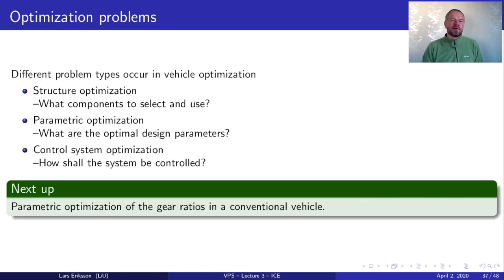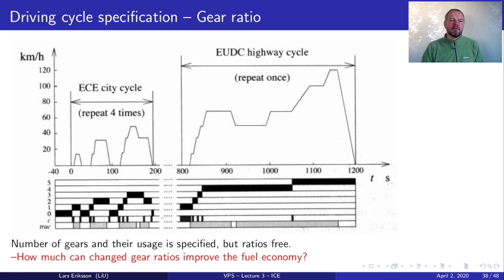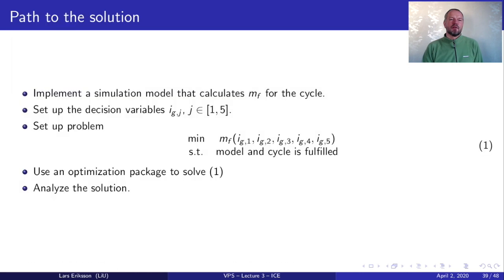The next thing we will look at is parametric optimization of the gear ratios as I have advertised previously in the lecture series. Here we have driving cycle specification as you recognize but the cycle does not prescribe what should the gear ratio be for gear number 1, gear number 2, gear number 3, gear number 4 and gear number 5. So these are free to select. So now we are thinking about how much can we improve the fuel economy by just adjusting these numbers.